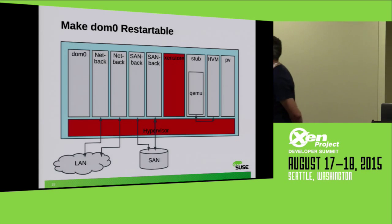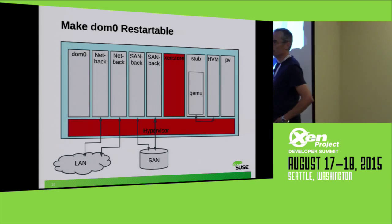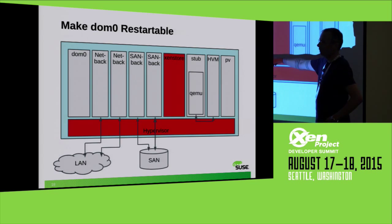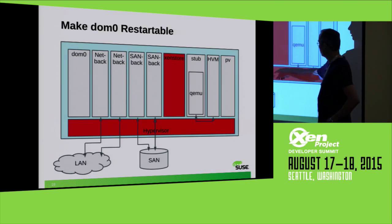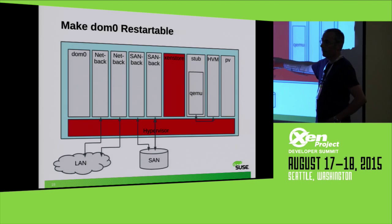Instead of a block backend, you have a SAN backend — a frontend here and the backend over there. The protocol is not at the block layer but at the Fibre Channel layer, more or less. It's a kind of virtual Fibre Channel card.